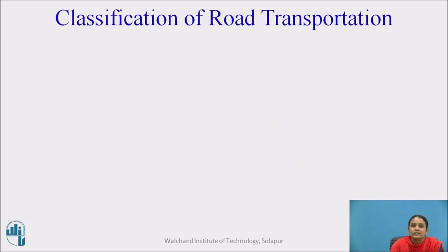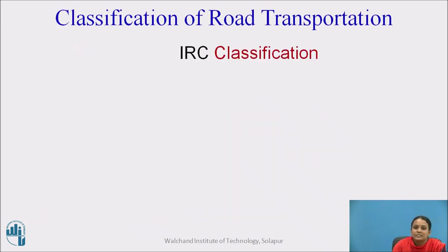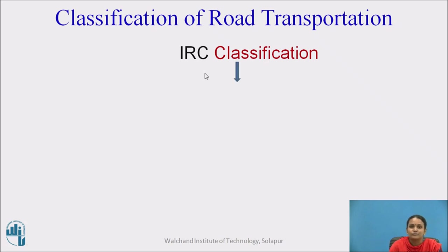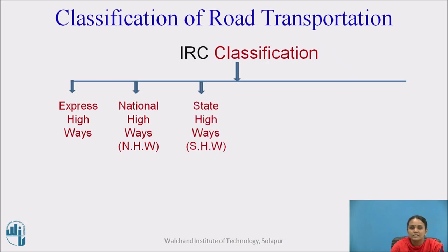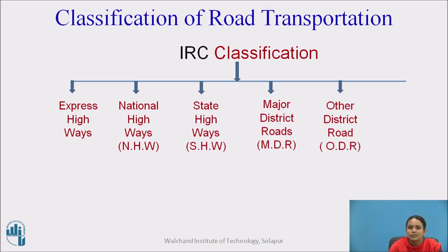Classification of roads. These roads are classified by IRC, which stands for the Indian Road Congress, established in 1934. The roads are classified as express highways, national highways, state highways, major district roads, other district roads, and village roads.